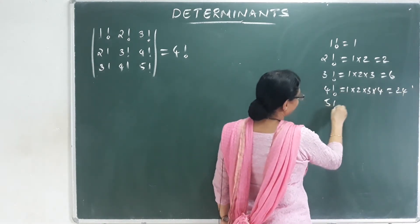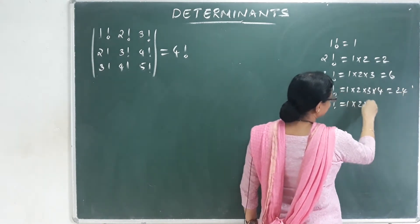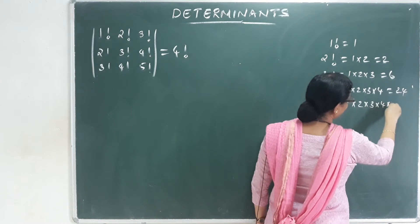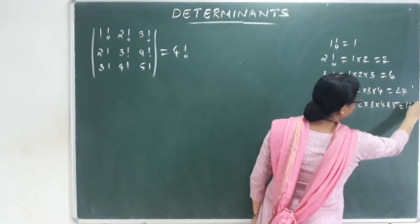5 factorial: 1 into 2 into 3 into 4 into 5, that is equal to 120.